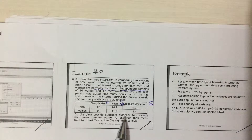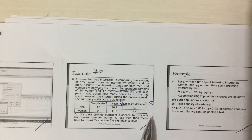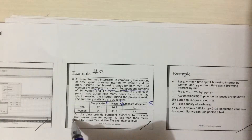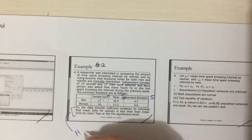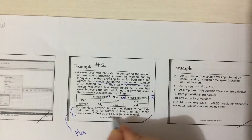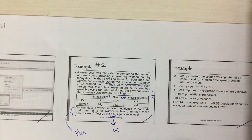Now we have to get evidence to conclude that the mean time for women is less than the mean time for men. From this, we will use a hypothesis test at 5% significance level, which is alpha.